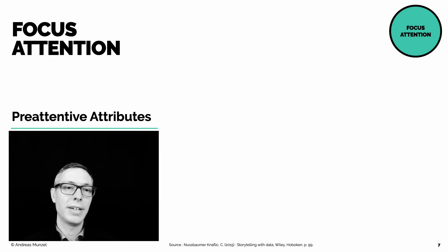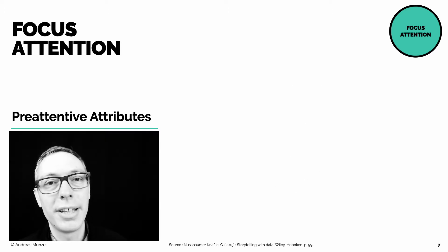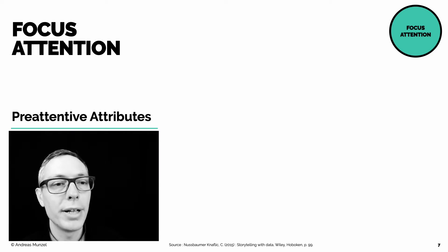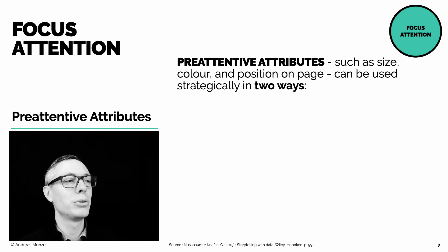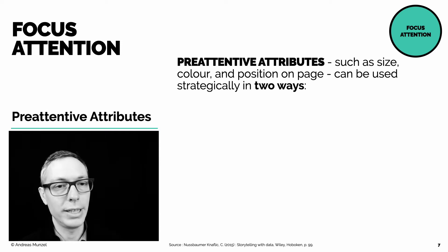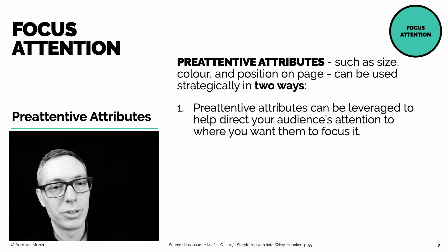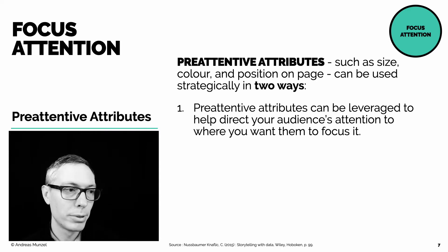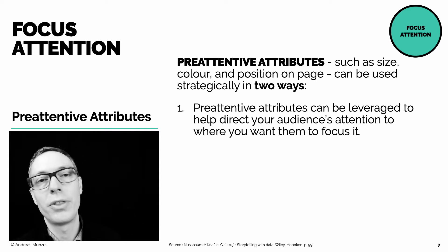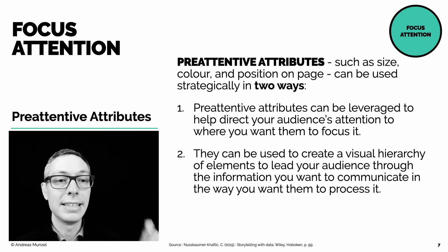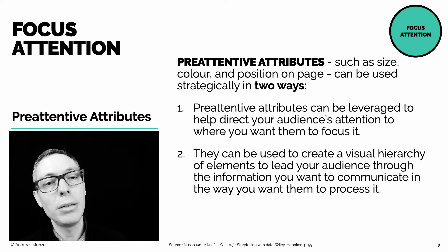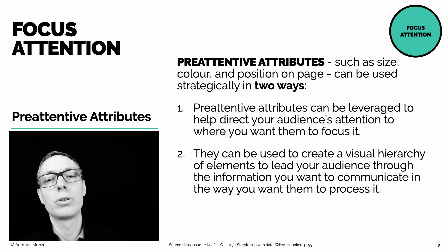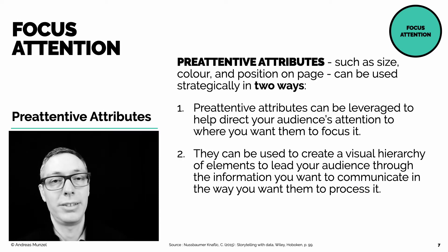So what are pre-attentive attributes and what do they do? They signal to us where to look. Pre-attentive attributes such as size, color, and position on page can be used strategically in two ways: they can direct your audience's attention to where you want them to focus, and they can be used to create a visual hierarchy of elements to lead your audience through the information in the way you want them to process it.